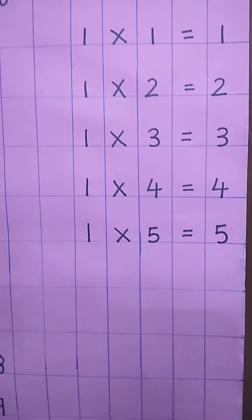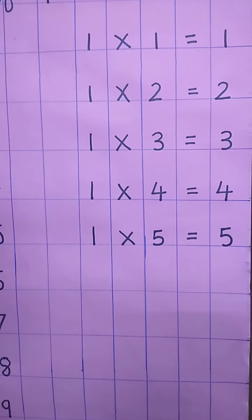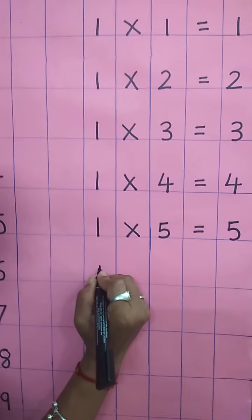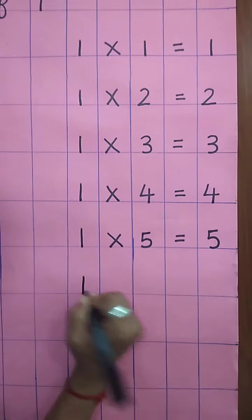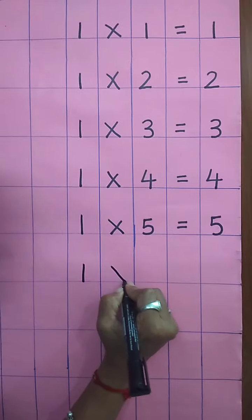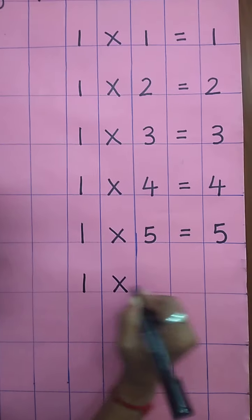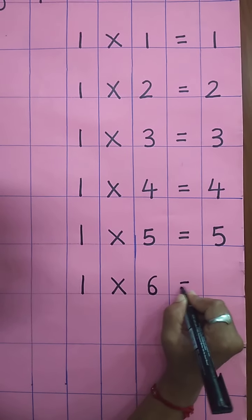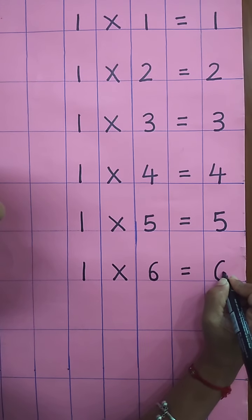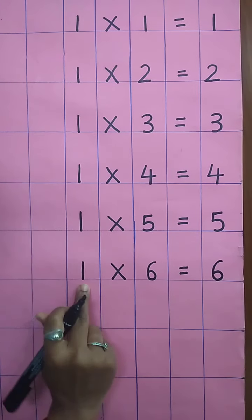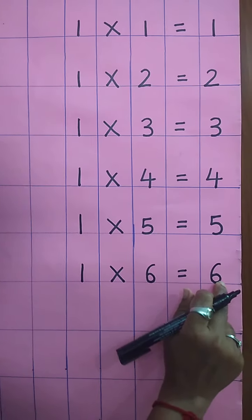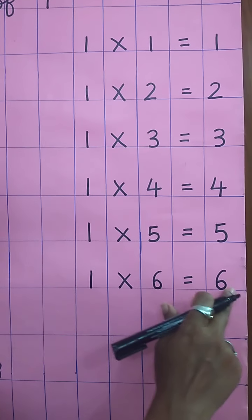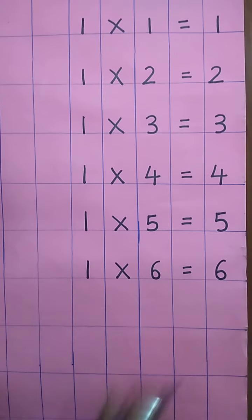You understand, children? How to write table of one? Again, write here. One, six's are six. One six's are six. Speak and write. One six is six.